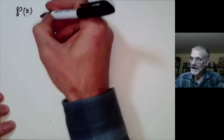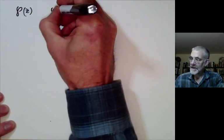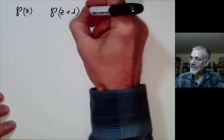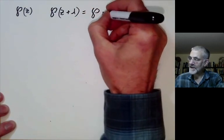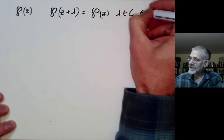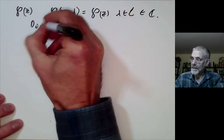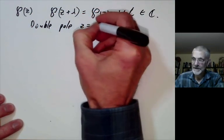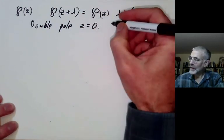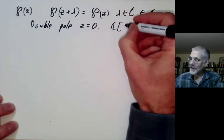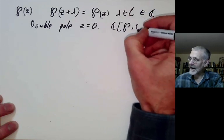This is part of a series of lectures on elliptic functions. I'll start with a quick review of the previous lecture. We were talking about the Weierstrass elliptic function P(z). This is elliptic, meaning it's periodic for lambda in some lattice L, a subset of the complex numbers. There's a double pole at z=0, and all elliptic functions can be written as polynomials in the elliptic function and its derivative.